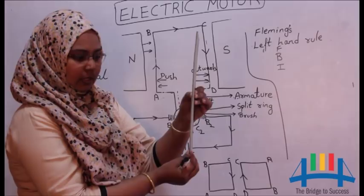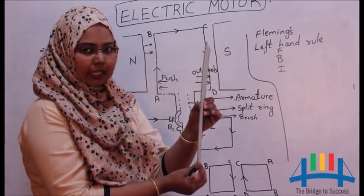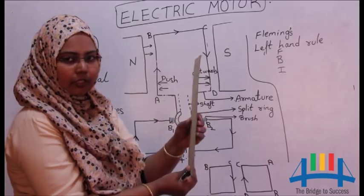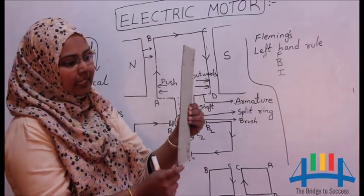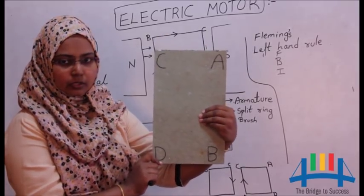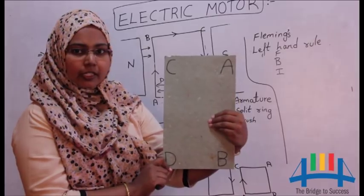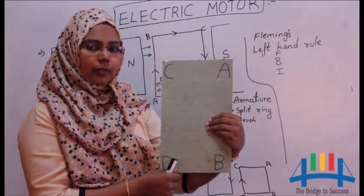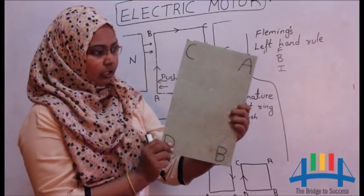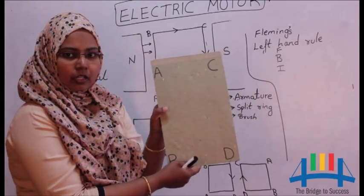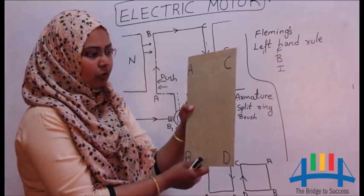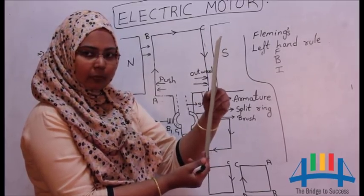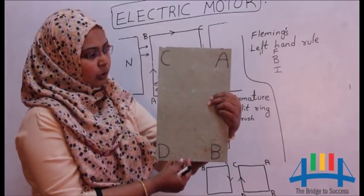Once the armature is in this position, it doesn't experience any magnetic force because the rings C1 and C2 are not in contact with the brushes. But still, the coil turns and completes the remaining one-fourth rotation. Why? The reason is inertia of motion. According to this law, a body in motion continues to remain in motion. So this armature has experienced magnetic force and completed one-fourth rotation. Body is in motion. It wants to remain in motion according to the inertia of motion.